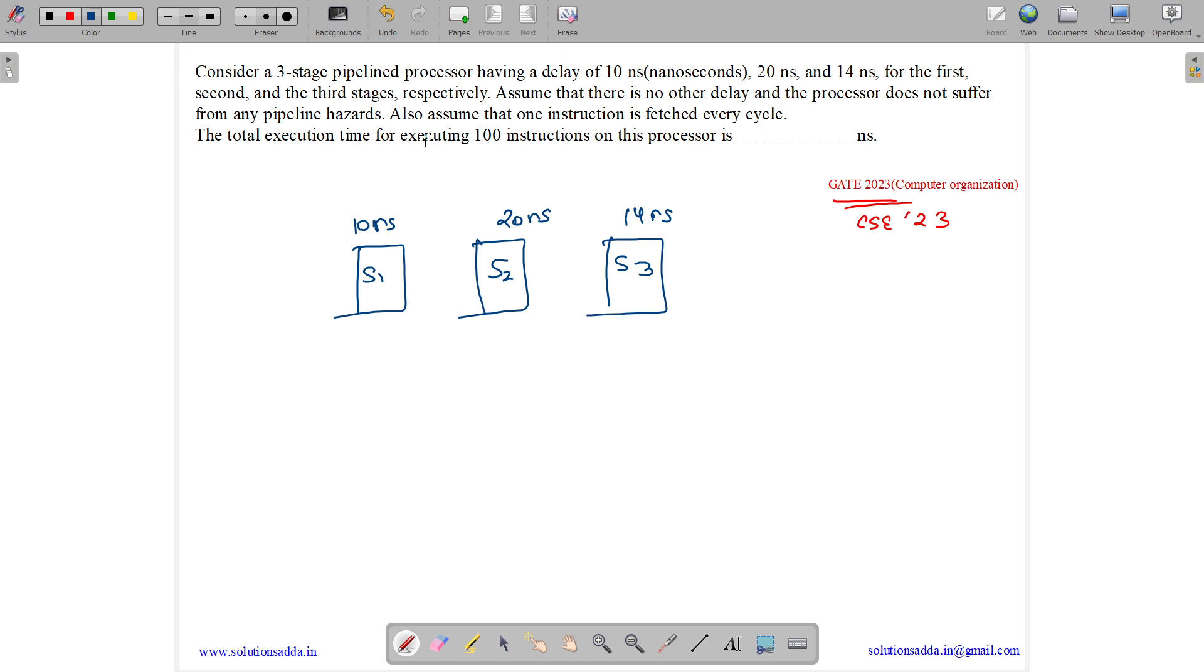The total execution time for executing 100 instructions. So we have n equals to 100, 100 instructions. And how many stages? Let k denote the number of stages in a pipeline. Then we have 3 stages.